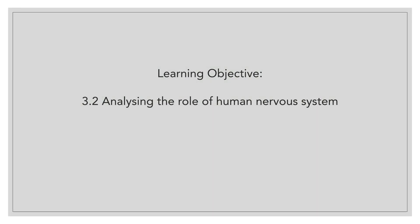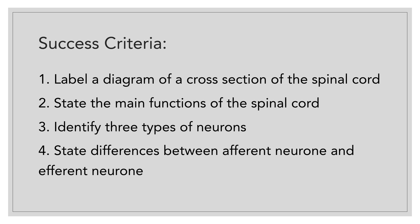The learning objective for today's lesson is analyzing the role of the human nervous system. The success criteria are: first, you are able to label a diagram of a cross-section of the spinal cord; second, you are able to state the main functions of the spinal cord; third, you are able to identify the three types of neuron; and the last one, you are able to state the differences between afferent neuron and efferent neuron.